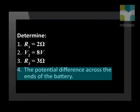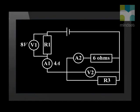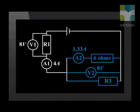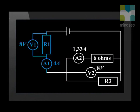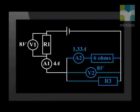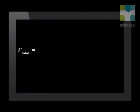Now let's look at the final question — we need to determine the potential difference across the ends of the battery. Remember that this equals the total volts used in the circuit. We can think of the circuit in two parts: a series part and a parallel part. We use 8 volts to get through the series part and another 8 volts to get through the parallel part. Therefore, V total equals 8 plus 8, giving us a total reading of 16 volts.